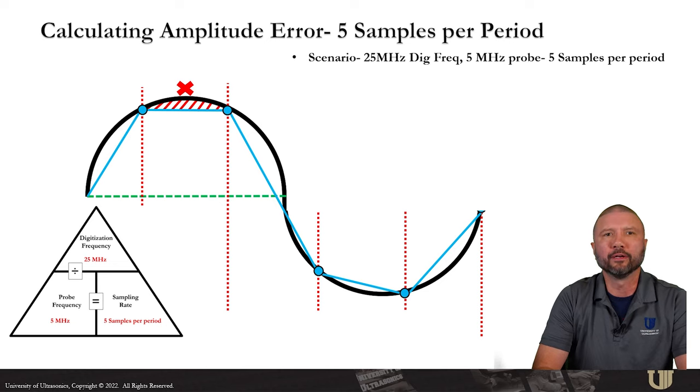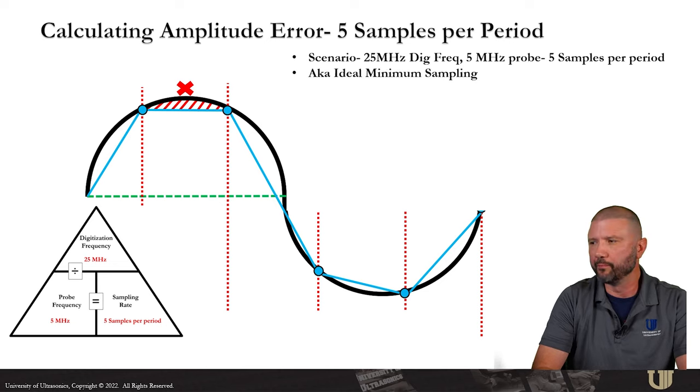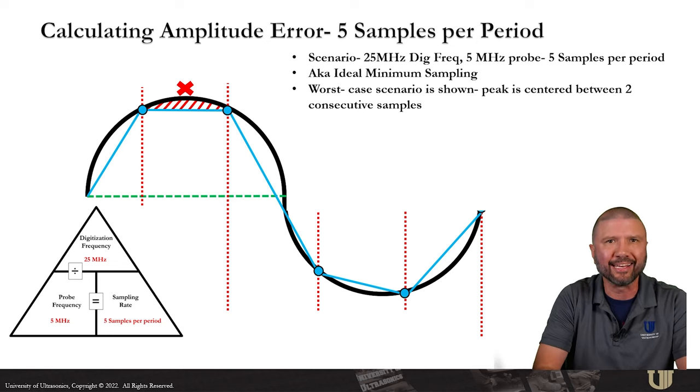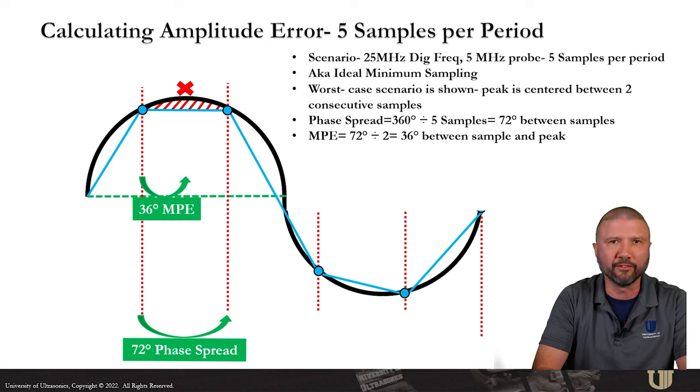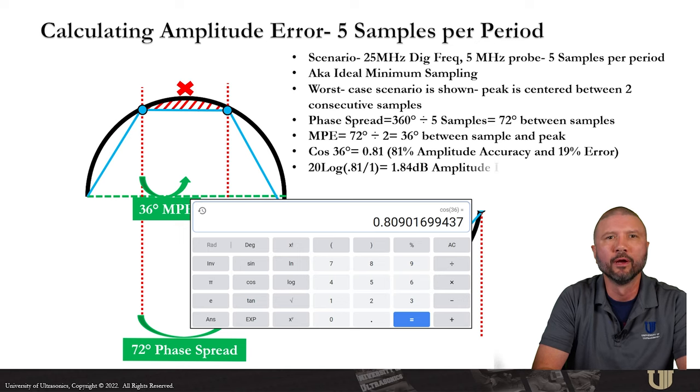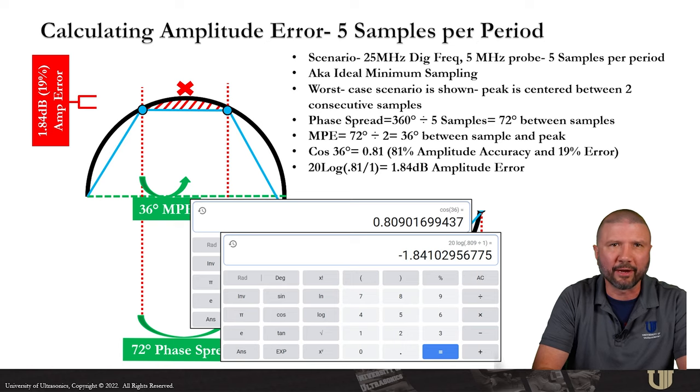Let's try another one. 25 MHz digitizing frequency with a 5 MHz probe. And that's going to give me five samples per period, aka ideal minimum sampling. Again, I've got the worst case scenario shown where the peak is centered between two samples. Phase spread is 360 divided by 5, which is going to tell me there's 72 degrees between samples. Divide that by two and I get my maximum phase error of 36 degrees between the sample and the peak. Cosine of 36 is 0.81, which tells me I've got about 81% accuracy and 19% error. And if I convert that to a dB, I get about 1.84 dBs. Five times the probe frequency, which gives us five samples per period, is the minimum digitization frequency allowed for encoded phased array in ASME Section 5, Article 4, Mandatory Appendix 5. We use this because we can keep within two dBs of amplitude error.